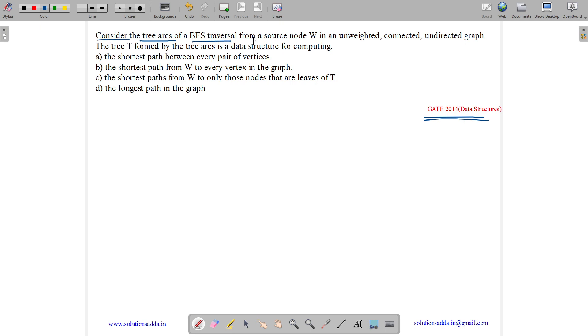Consider the tree arcs of a BFS traversal from a source node W in an unweighted, connected, undirected graph. The tree T formed by the tree arcs is a data structure for computing: the shortest path between every pair of vertices, the shortest paths from W to only those nodes that are leaves of T, or the longest path in the graph.